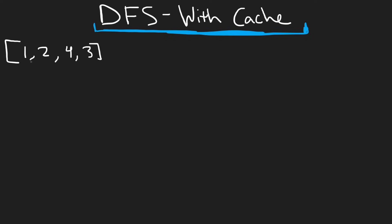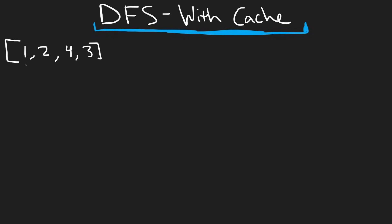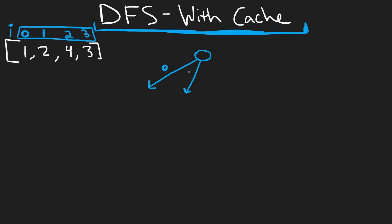Let's look at another example and do depth first search with caching to see how that improves our time complexity. We have an example of four elements — it's kind of obvious what the longest increasing subsequence is, so the result is going to be three elements. Let's start with the brute force approach and check all subsequences starting at index zero, then index one, index two, and index three. Index zero has value one, index one has value two, index two has value four, and index three has value three.